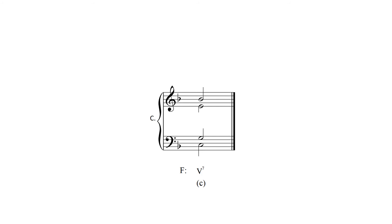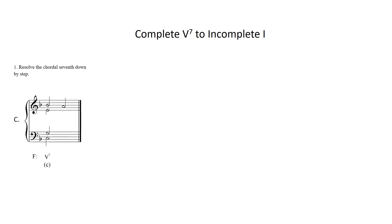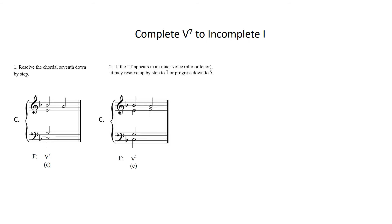What if the answer is no to the second question? What if the leading tone appears in an inner voice, the alto or tenor? In this example, the leading tone appears in the alto voice and represents a third possibility, scenario number three, represented as example C. Again, resolve the chordal 7th as always down by step. However, now that the leading tone appears in an inner voice, it may resolve up by step to scale degree 1, just like it did in the soprano, or it may move down to scale degree 5, providing two possible solutions.